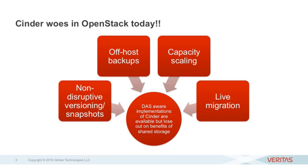Let me move to OpenStack. OpenStack is an infrastructure provider, and it provides Cinder for persistent block storage for Nova virtualized machines, and Manila for file storage services. Cinder has some issues today. Cinder is not DAS aware — it does not understand flash storage with close affinity direct-attached storage. That lack of awareness means Cinder cannot support scaling, off-host backups, versioning or snapshots, and live migration based on direct-attached storage.